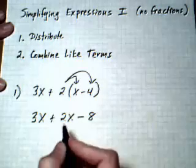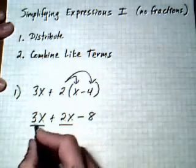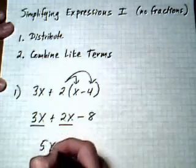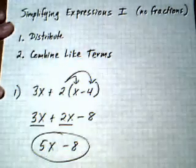Now, we're going to combine like terms. 3x plus 2x, add the coefficients of them, we get 5x. Bring down the minus 8, and we have our answer. 5x take away 8.